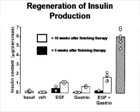But animals which received the combination of gastrin plus EGF showed that almost all the mice except one were completely protected from diabetes. The investigators then wanted to look inside the animals to see what exactly was going on. The animals were treated — control, gastrin alone, EGF alone, or the combination — for two weeks, and then the level of insulin was assessed.